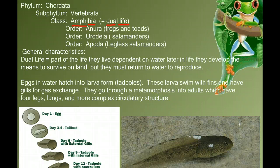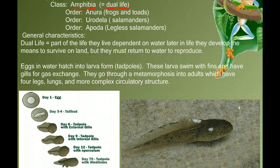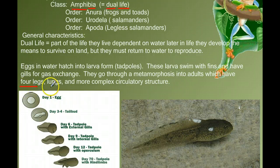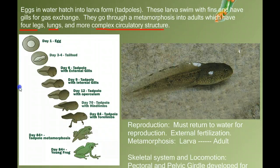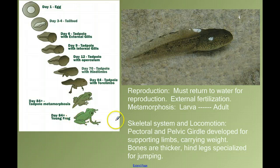The most obvious characteristic of these animals is that they are dependent on water for reproduction — they must reproduce in water. The egg that they lay is not an amniotic egg; it cannot survive outside of water. For the first time in this group, we're going to see limbs and lungs and a change in the circulatory system as they move from the aquatic tadpoles into the adult terrestrial animal. They must return to water for reproduction, with external fertilization, and metamorphosis is a major characteristic.